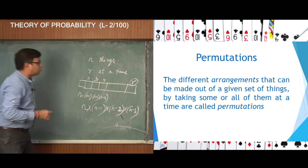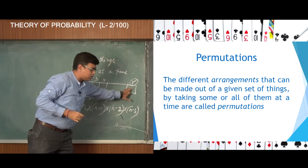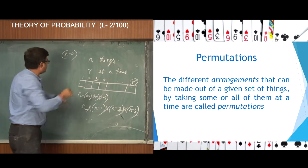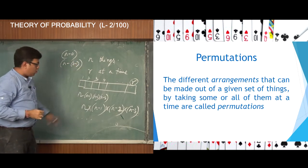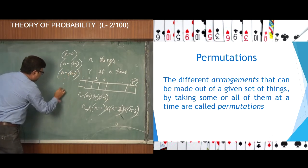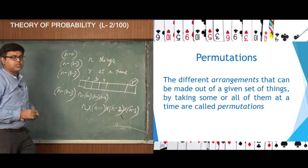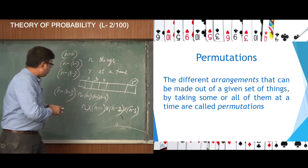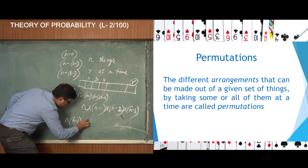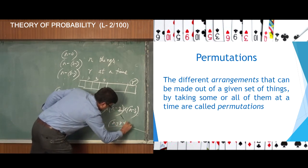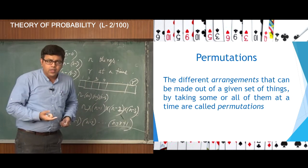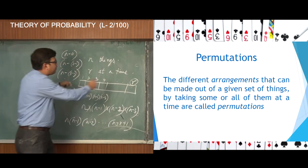What is the number of ways for the rth box? For the first box it is n, which is n minus 0. For the second box it is n minus 1, i.e., n minus (2 minus 1). For the third box it is n minus 2, i.e., n minus (3 minus 1). So for the rth box it is n minus (r minus 1). Therefore, the total number of ways of filling r boxes with n dissimilar things is n into n minus 1 into n minus 2 ... into n minus r plus 1.